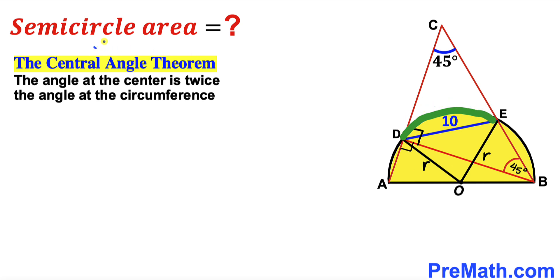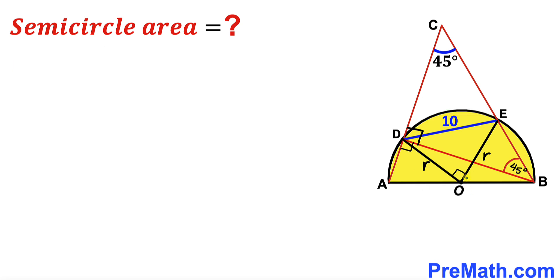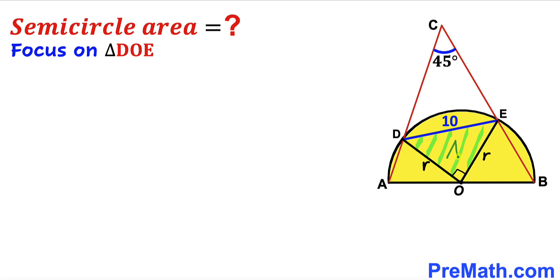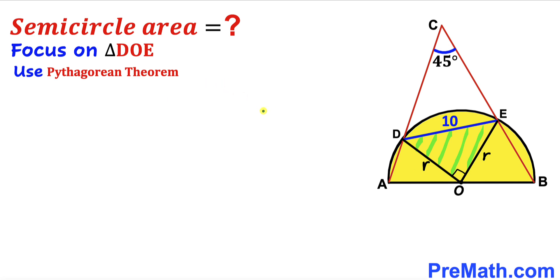The angle at the circumference subtends arc DE at 45 degrees, and the angle at the center subtends the very same arc. So by the central angle theorem, the angle at the center is twice 45 degrees — therefore angle DOE is 90 degrees. Since angle DOE is 90 degrees, triangle DOE is a right triangle. The side lengths of this triangle are DE = 10, OD = r, and OE = r. We will now apply the Pythagorean theorem to solve for radius r.